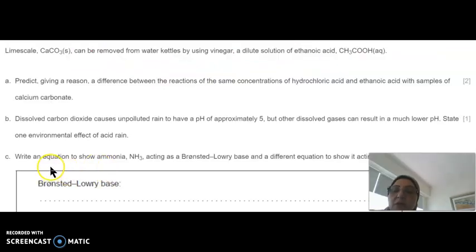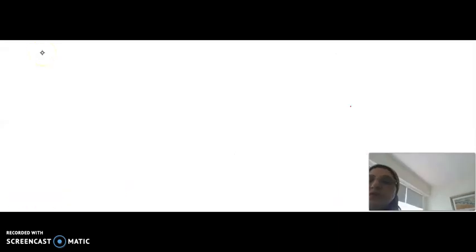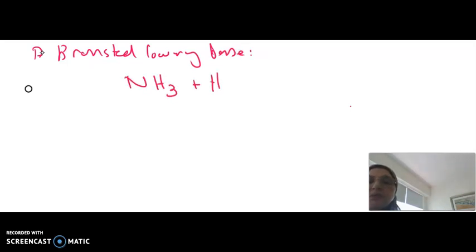Next question. Write an equation to show ammonia acts as a Bronsted-Lowry base and a different equation to show it acts as a Lewis base. To show that ammonia acts as a Bronsted-Lowry base, you need just to show that ammonia can accept a proton, giving an ammonium ion.